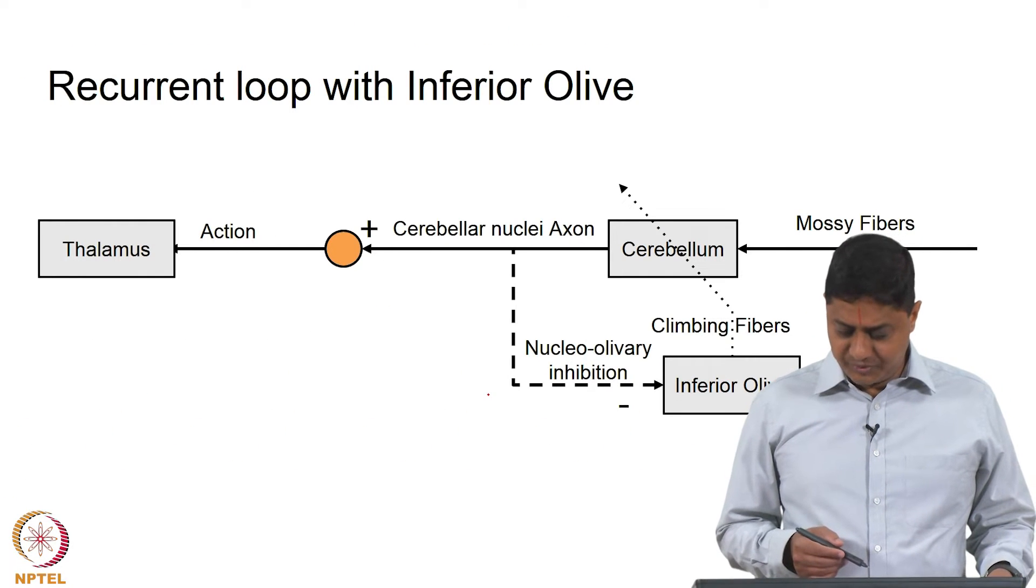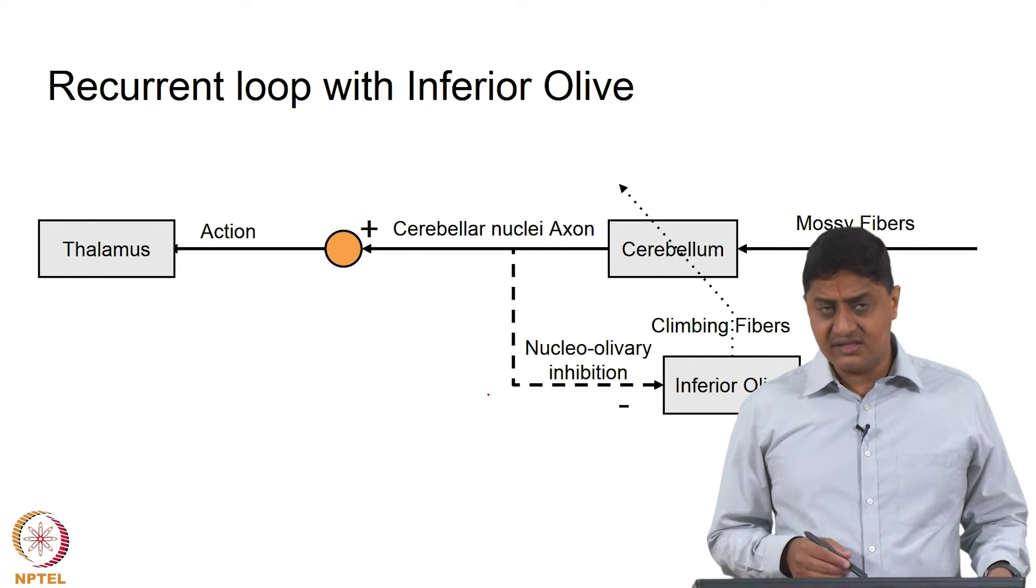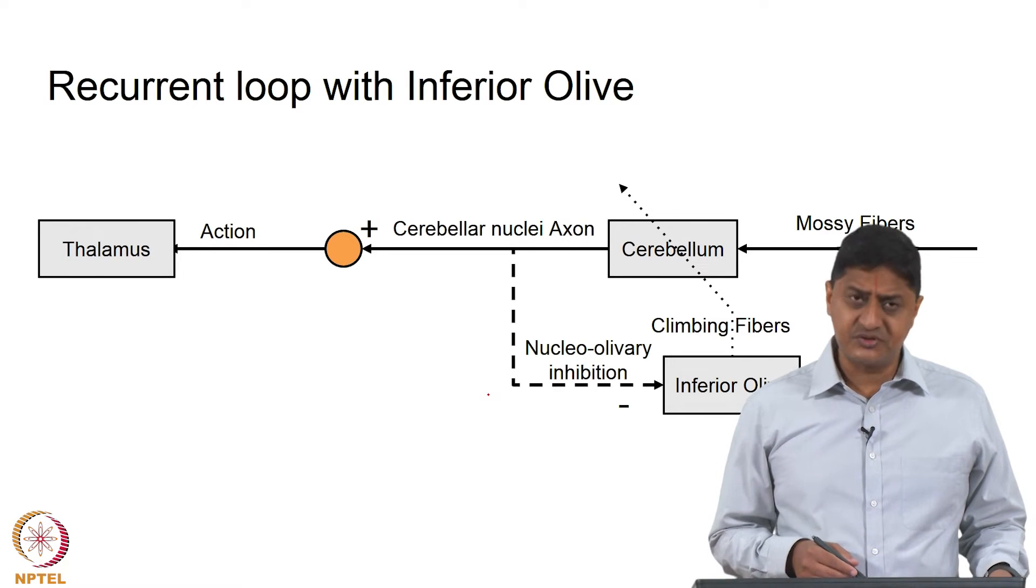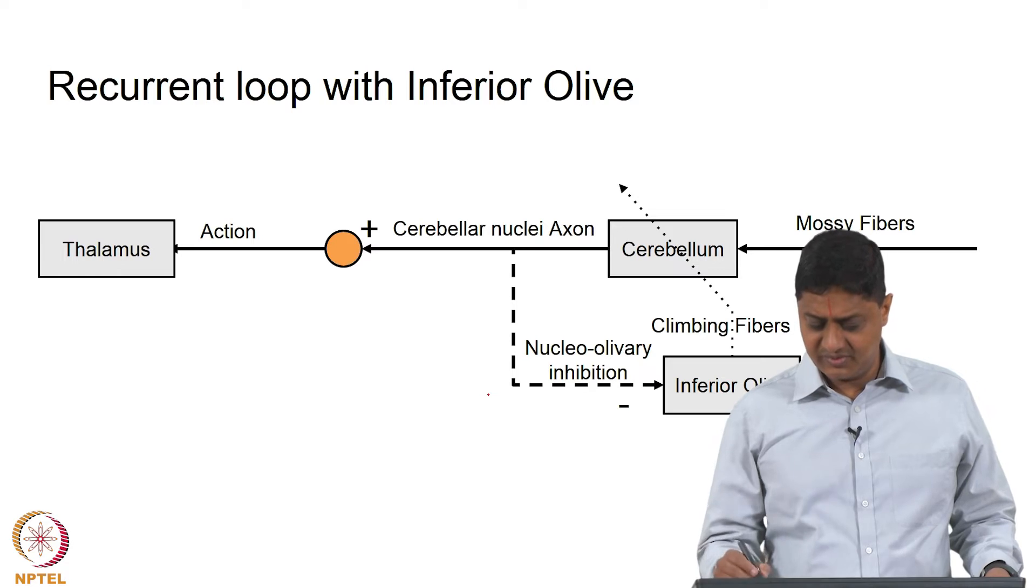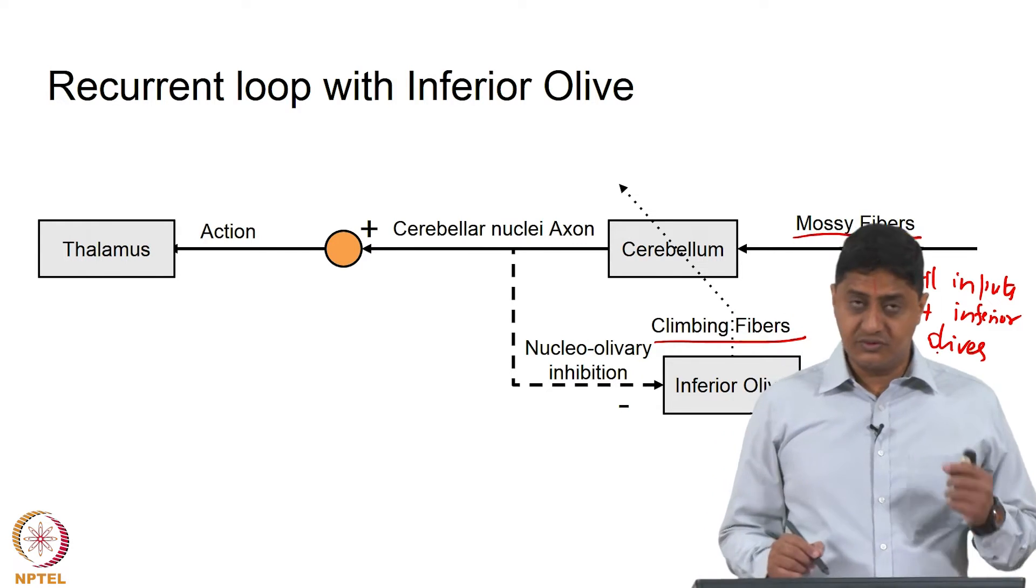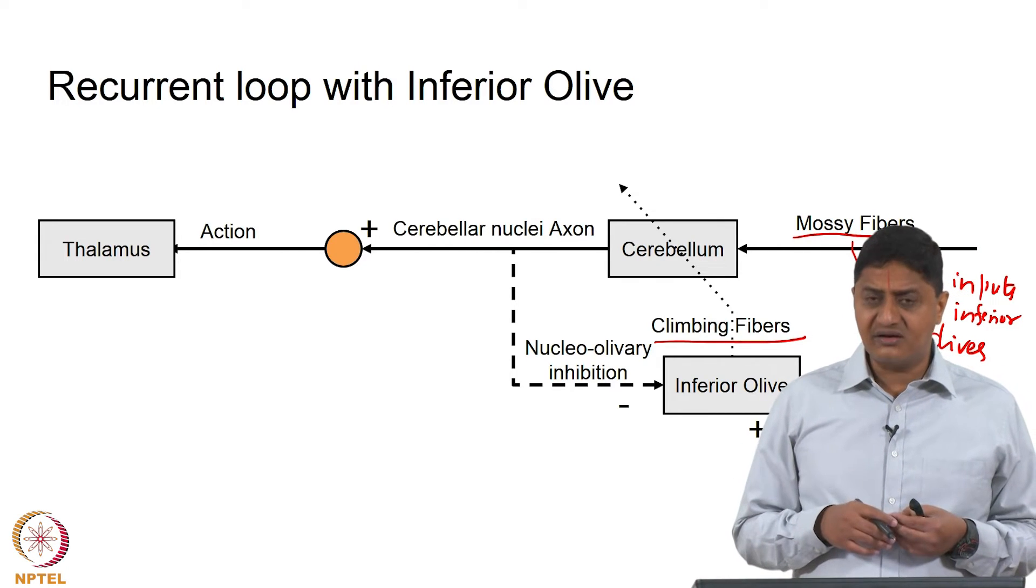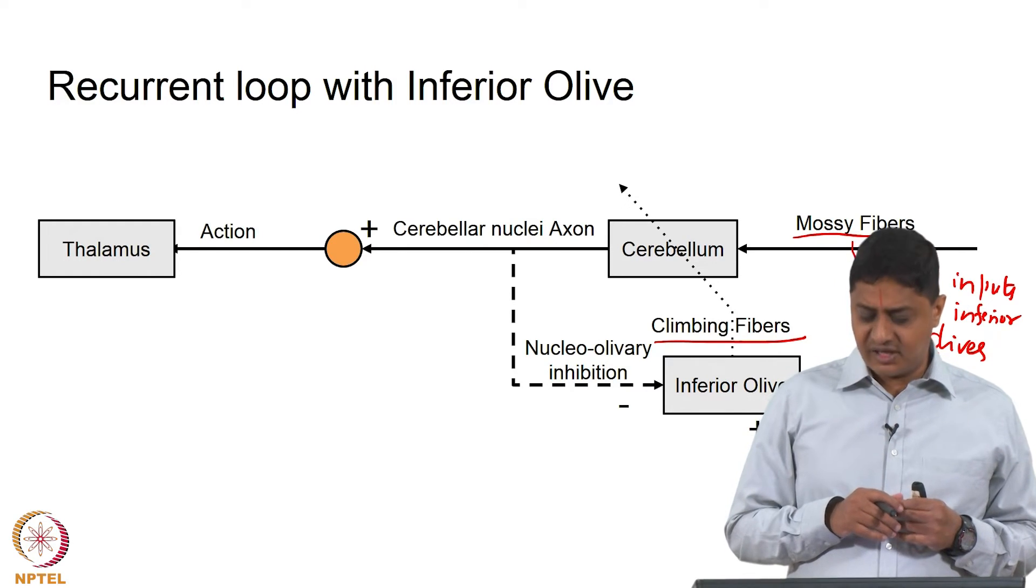Then the other recurrent loop is with the inferior olive. We have said this inferior olive is one of the powerful or primary sources of inputs. There are two major sources of input to the cerebellum: these are mossy fibers and climbing fibers. Mossy fibers include all the inputs except inferior olive. This may be from pons, from spinal cord, and any other region.